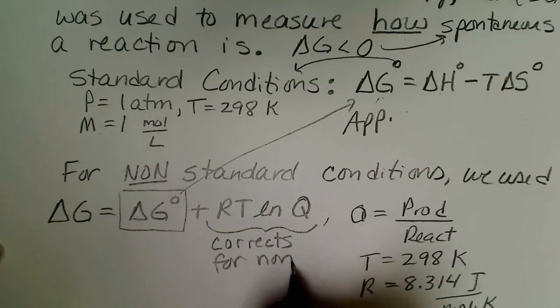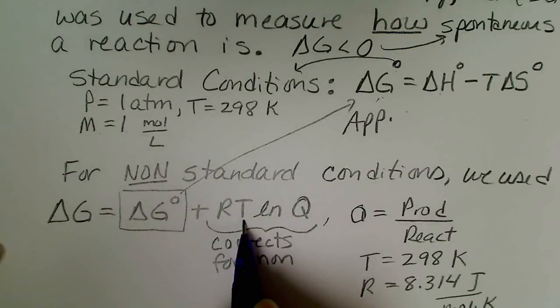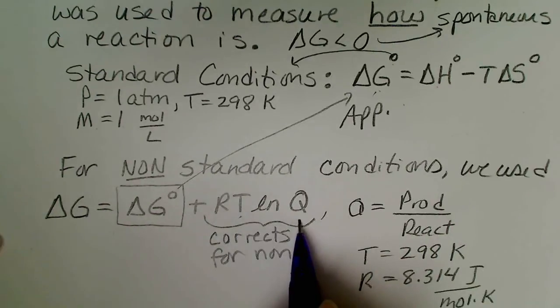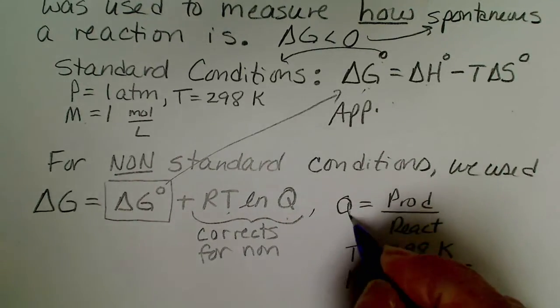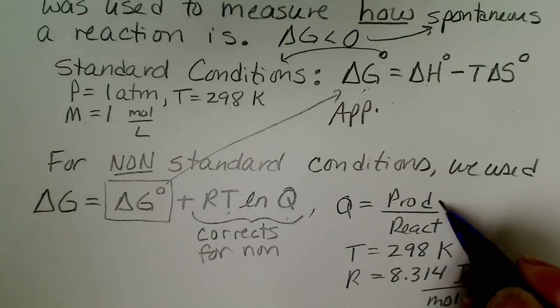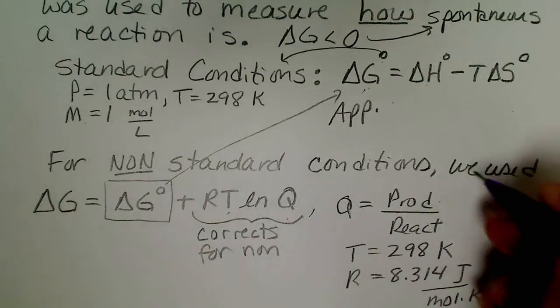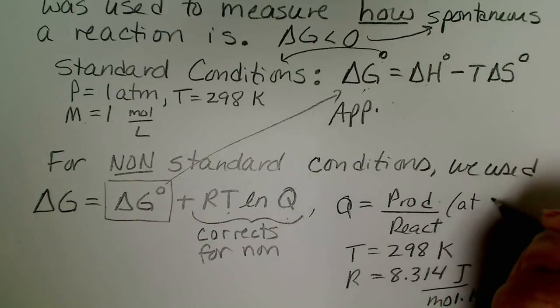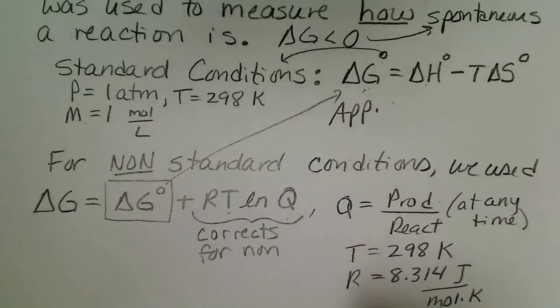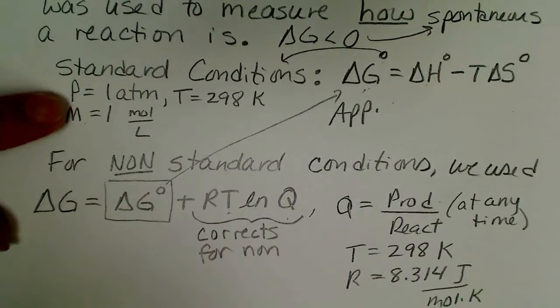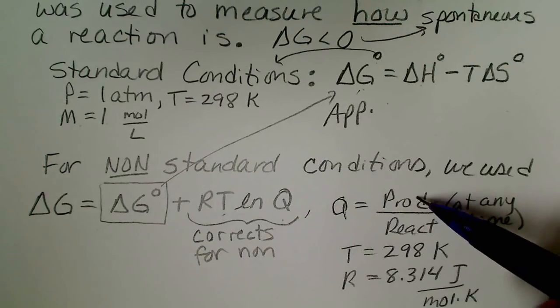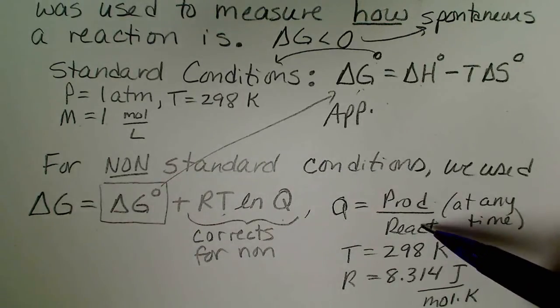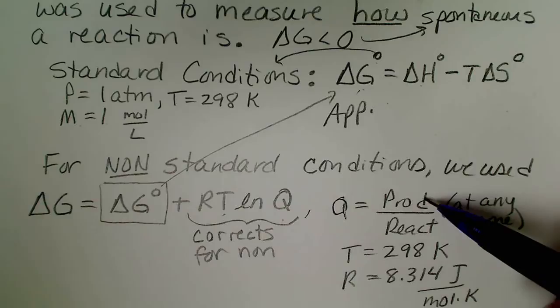And then this was the corrective term, so this corrects for non-standard conditions. We could have any temperature and Q, if you recall, looks just like the equilibrium expression which is all of the products divided by all of the reactants, but this is at any time during the reaction.